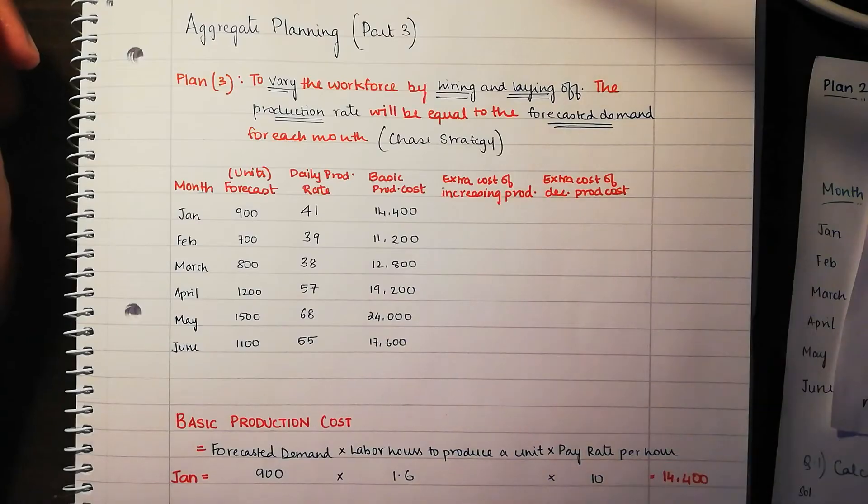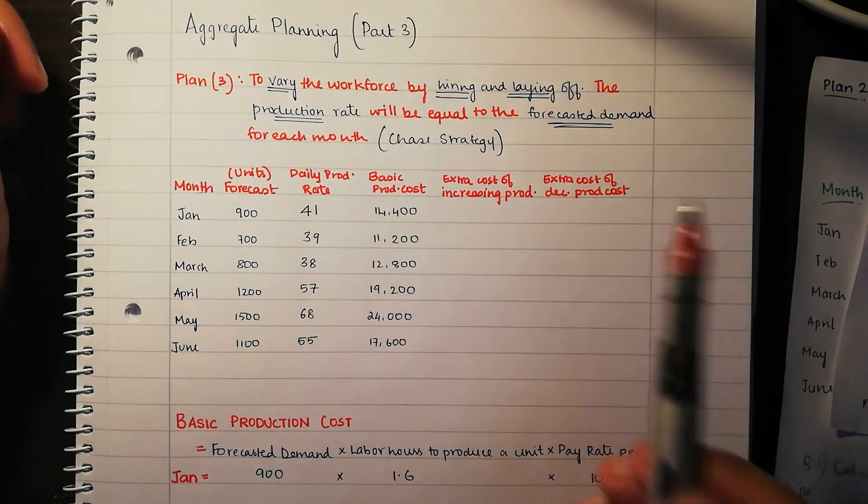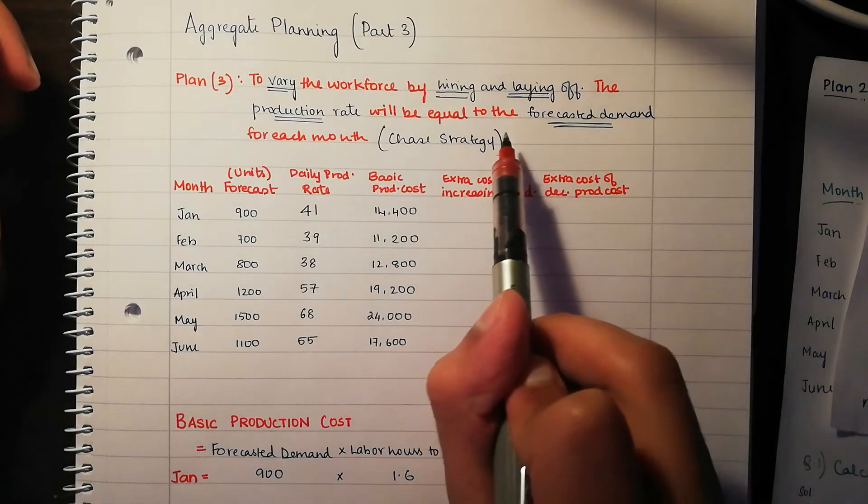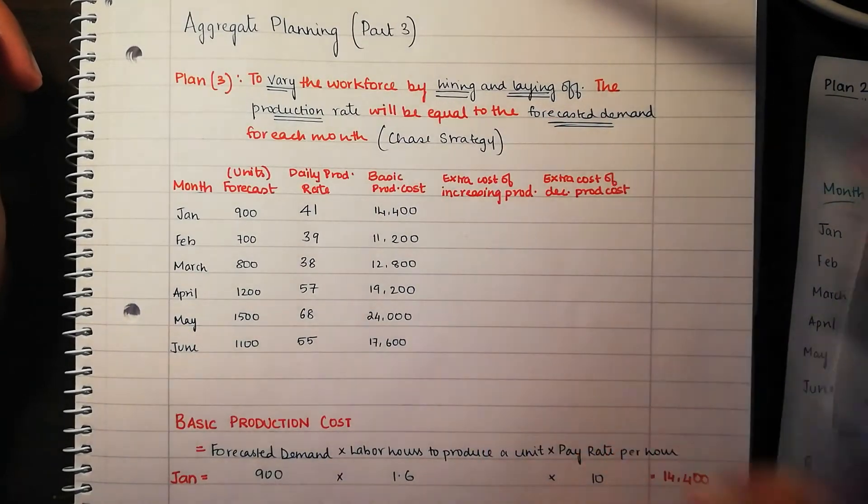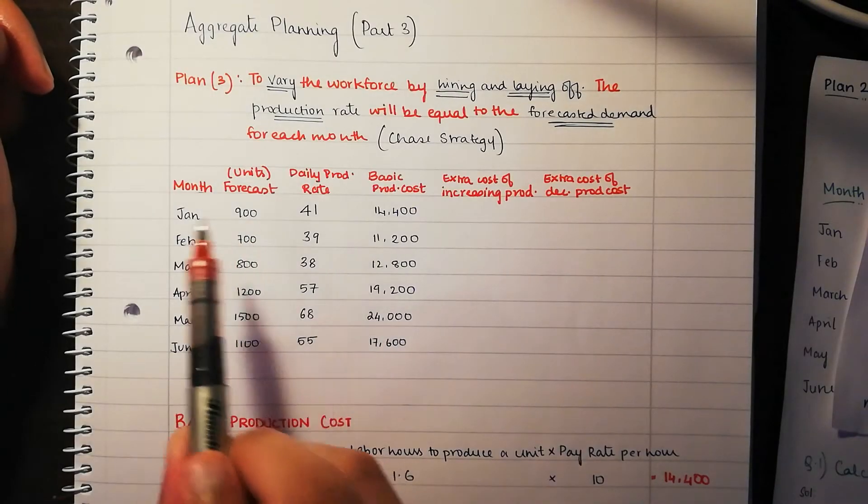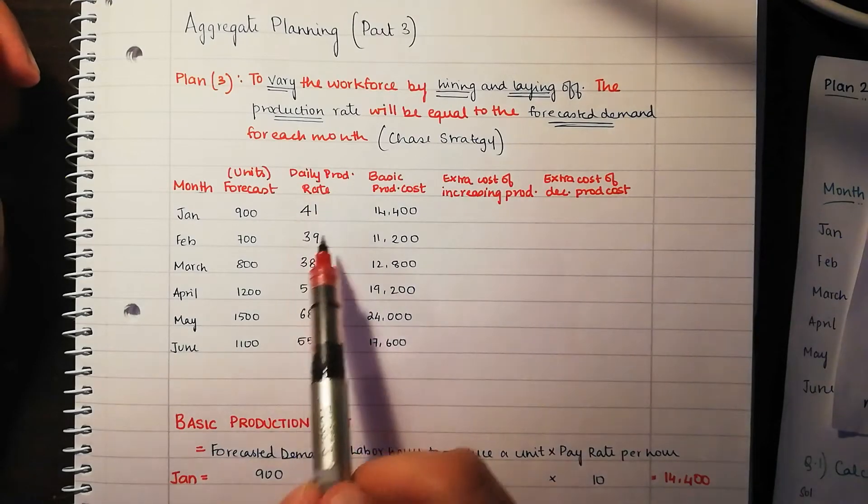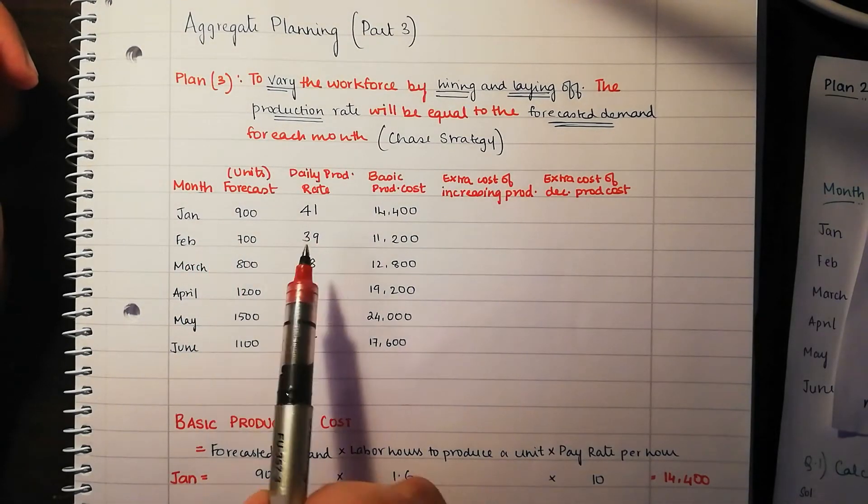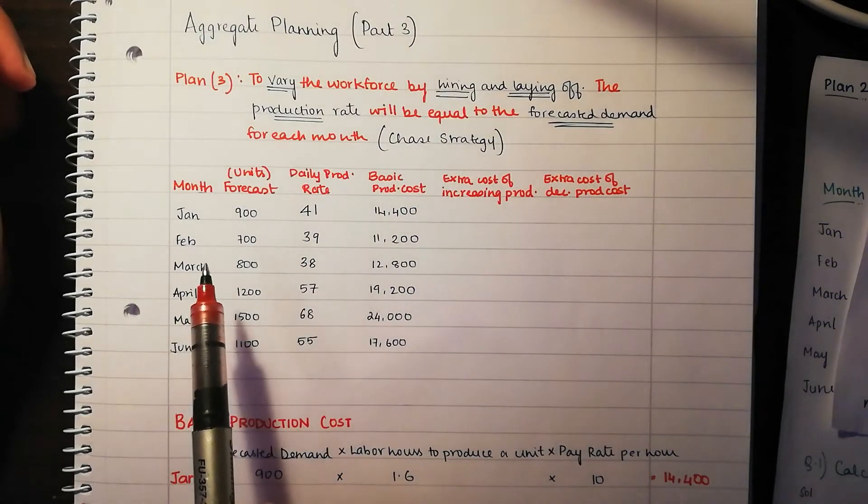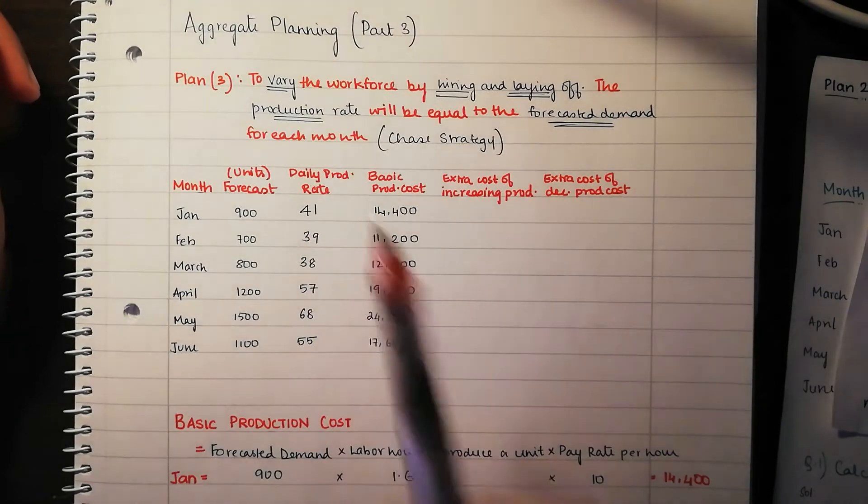Now this here is the main workings of plan 3 coming into use. What do we mean by extra cost of increasing production and extra cost of decreasing production? This basically is following this statement here. They want to make sure that for each month, the production rate would be equal to the forecasted demand. So let's just forget January for a second and go to February. In February, we used to produce 41 per day in Jan and that's suddenly reduced to 39 per day in Feb.